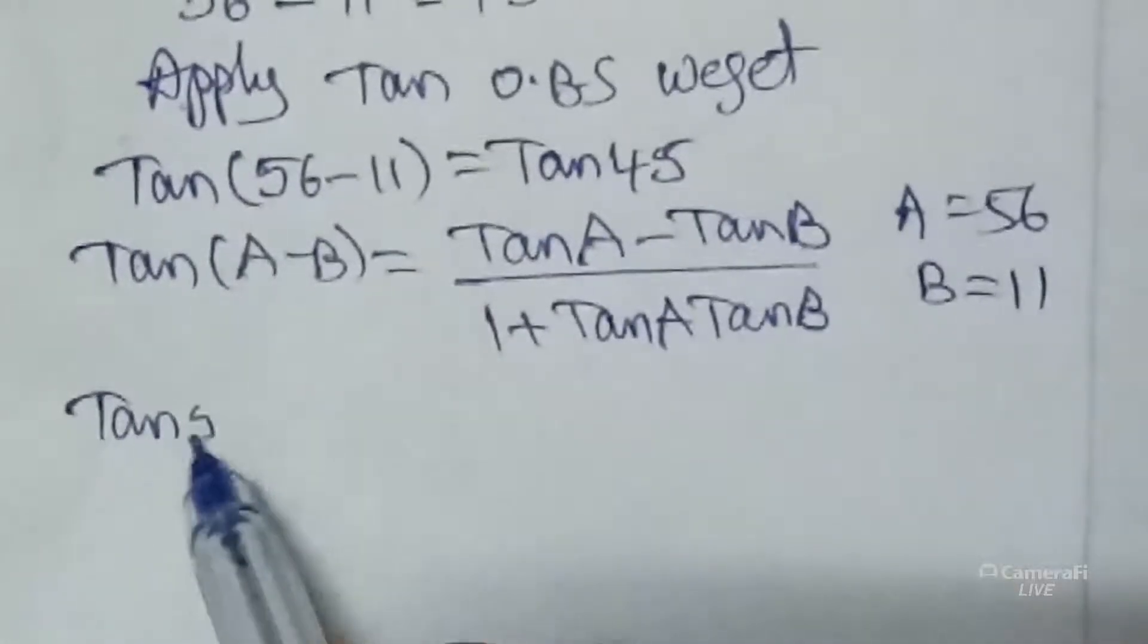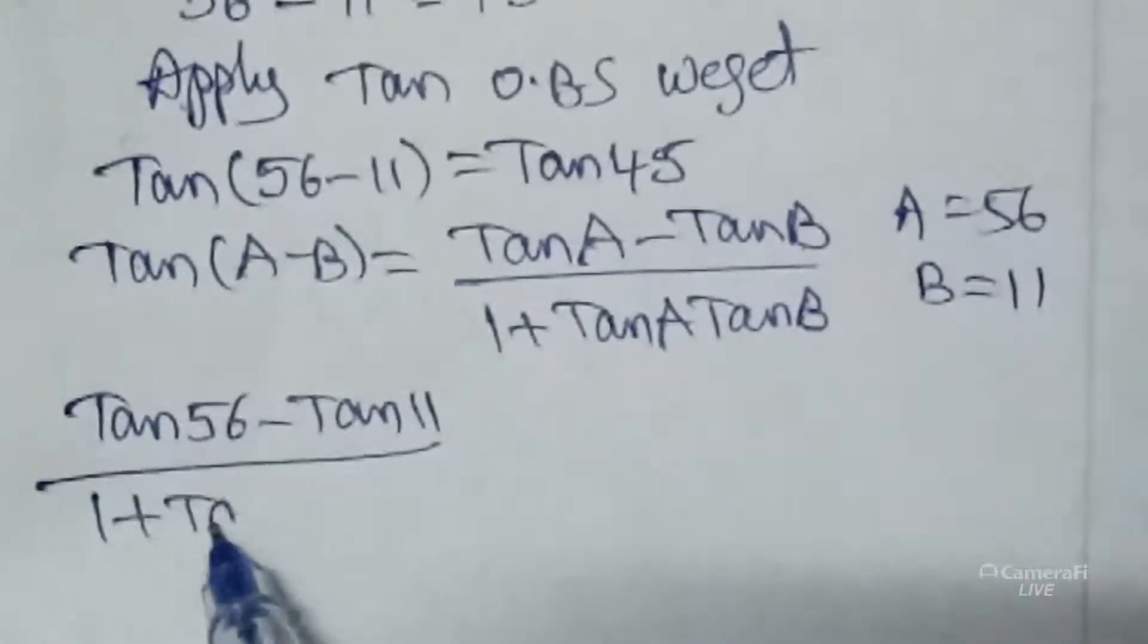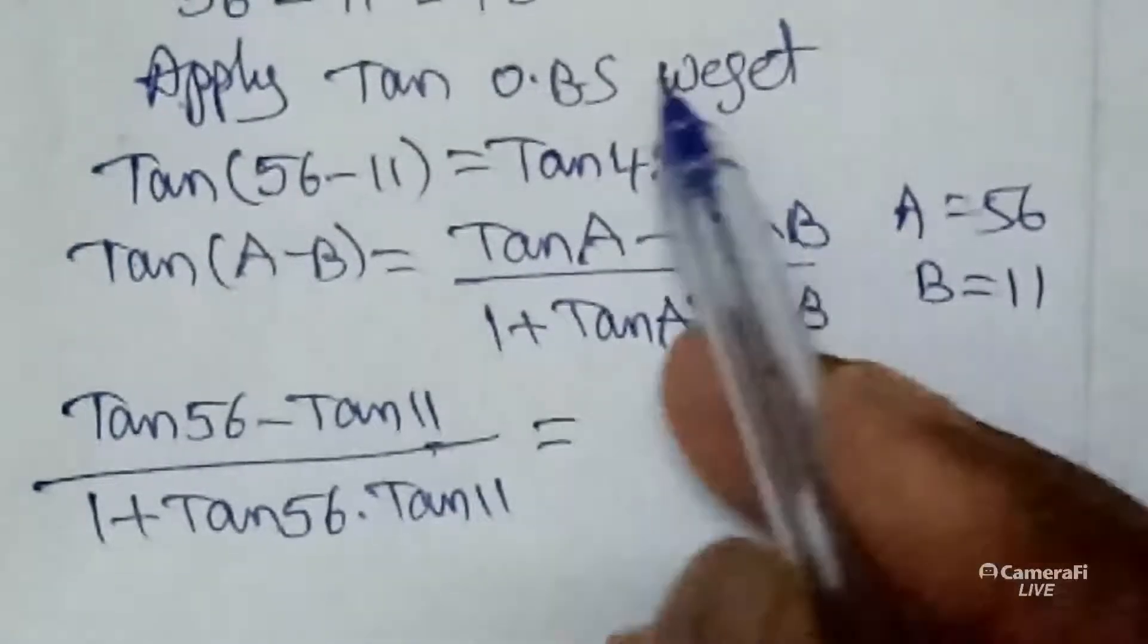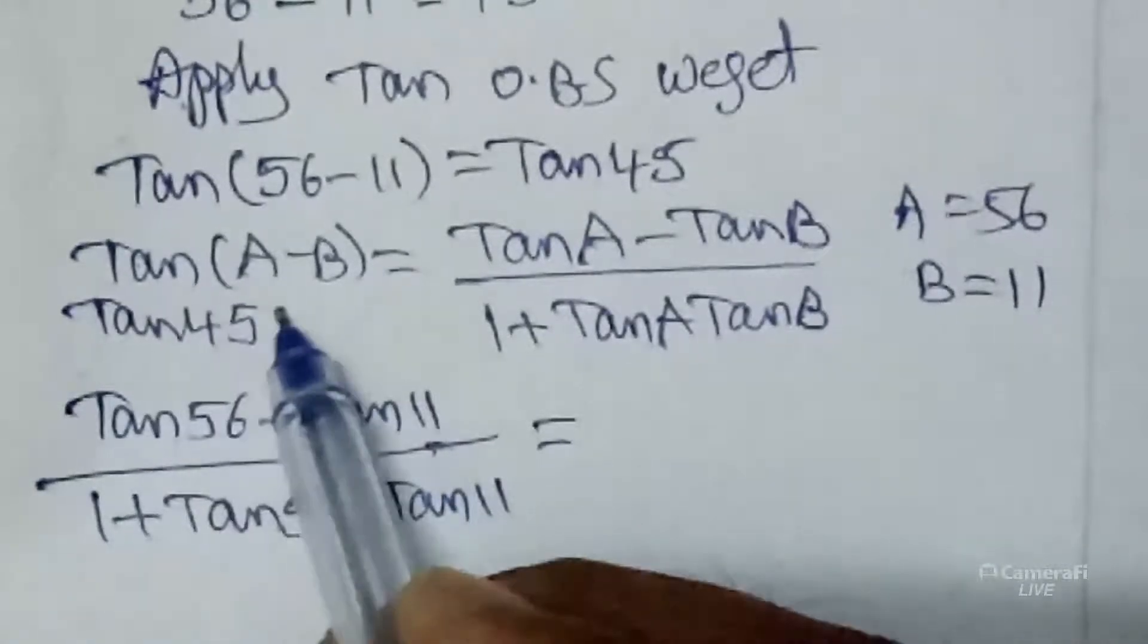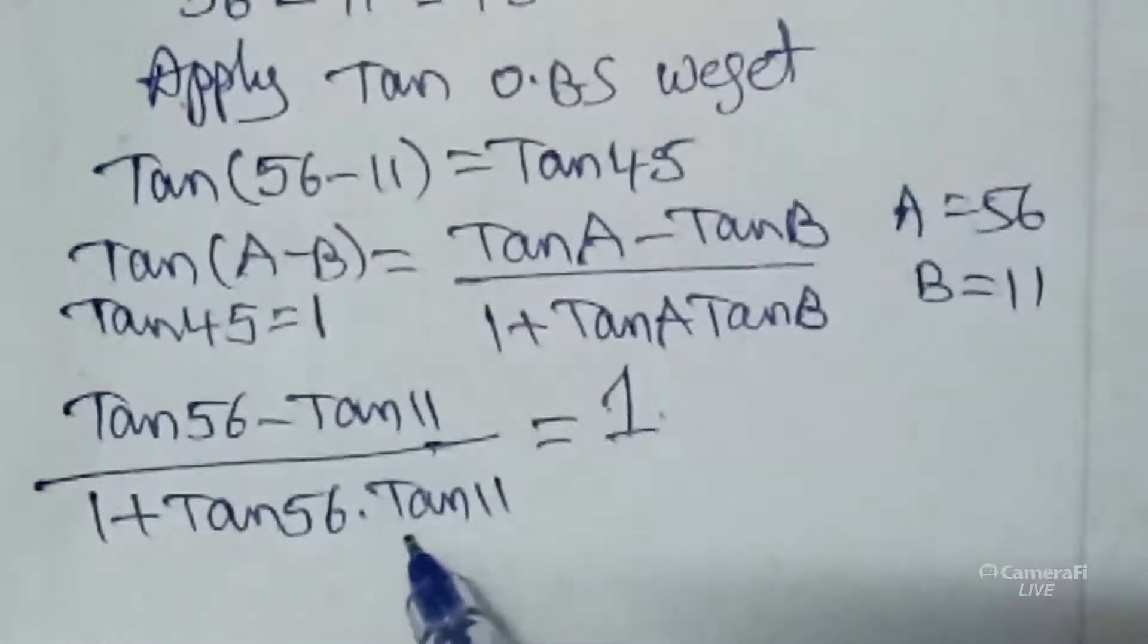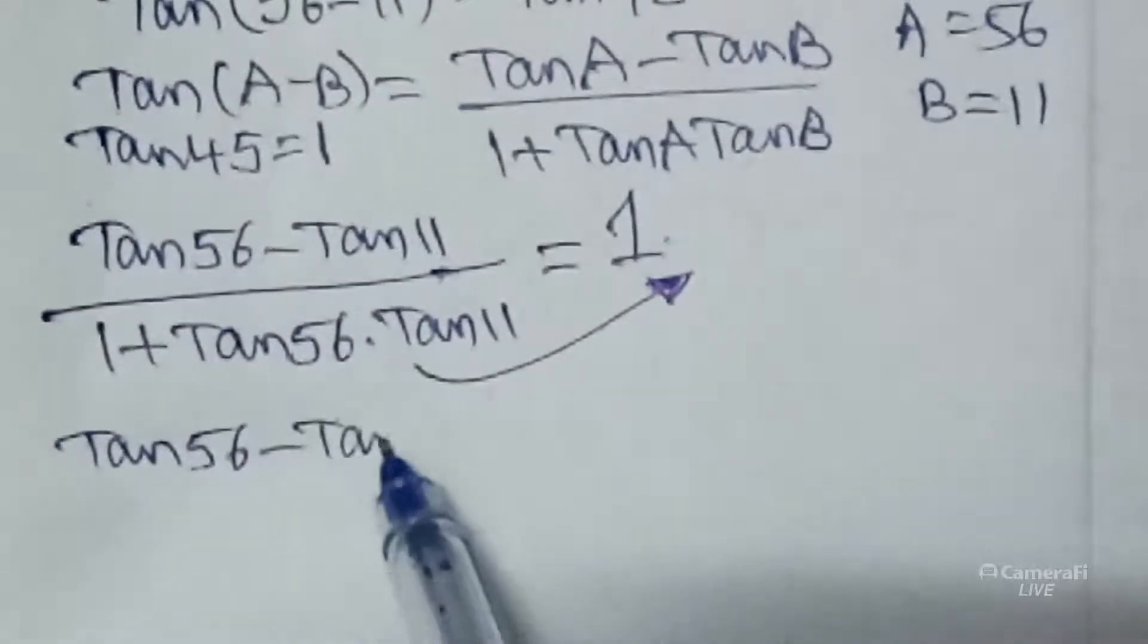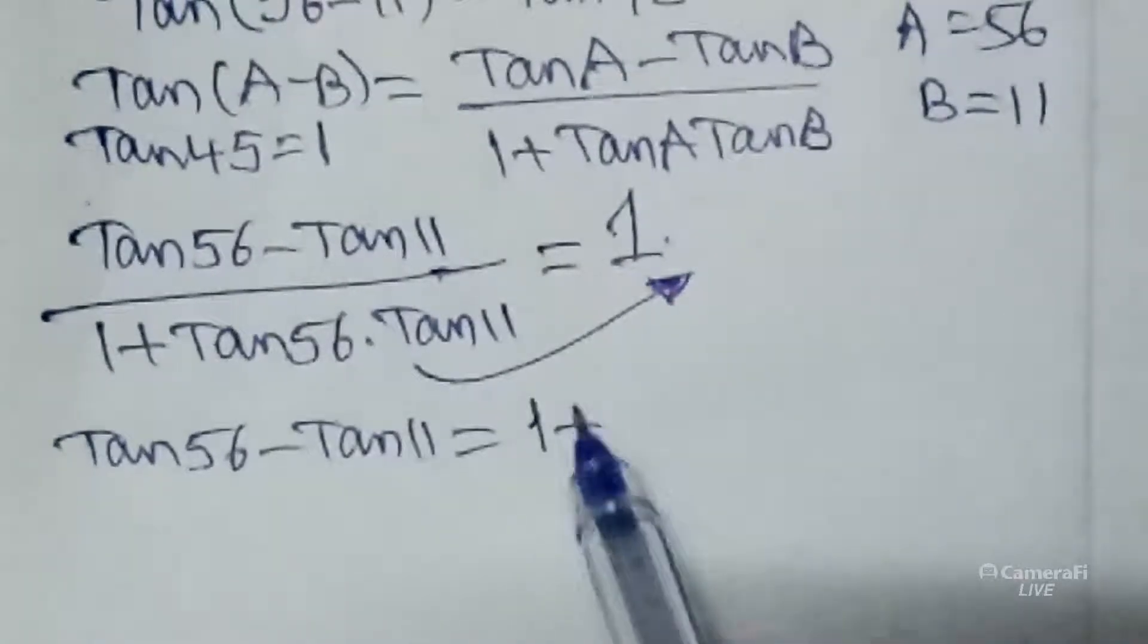Tan 56 minus tan 11 by 1 plus tan 56 tan 11 is equal to right side. Tan 45 is 1, so you can write right side value 1. Next, cross multiply. We get tan 56 minus tan 11 is equals to 1 into this denominator value.